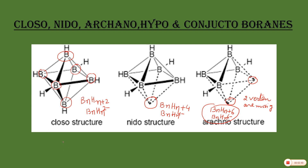The next type is Hypho borane. In this case, three vertices are missing from the closed polyhedra. The general formula for Hypho borane is BnHn+8, or BnHn⁸⁻.